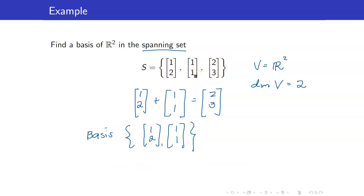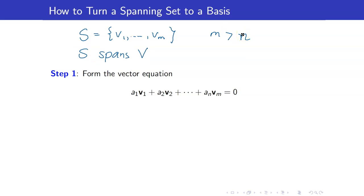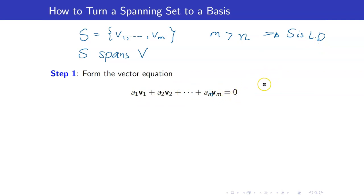I will give you a step-by-step procedure on how to determine which among your vectors are the redundant vectors. Suppose that we have a set S containing M elements and S spans V, and M is greater than N — hence S is not a basis for V. Because if the number of elements is more than the dimension of your space, we know that it is linearly dependent. Thus, if it is linearly dependent, when you form this vector equation A1V1 up to AMVM, there will be non-trivial solutions.